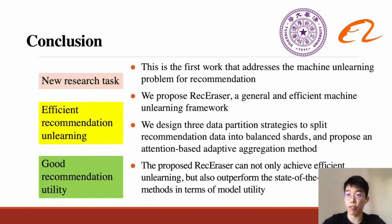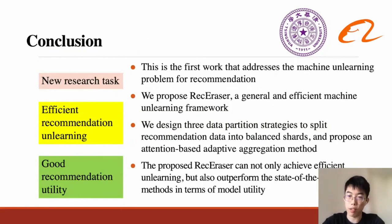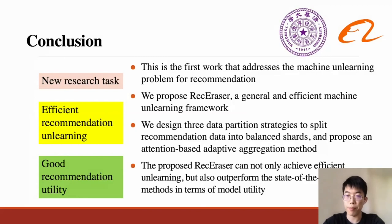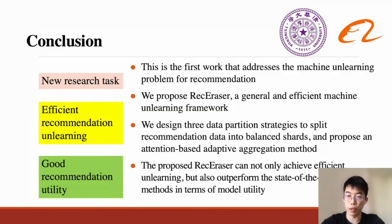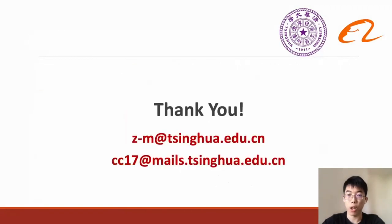In conclusion, we propose the novel RecEraser framework, which is, to the best of our knowledge, the first machine unlearning method tailored to recommendation tasks. To permit efficient unlearning while keeping collaborative information, we design three data partition strategies and propose an adaptive aggregation method to improve global model utility. Extensive experiments on three real-world datasets demonstrate that RecEraser can achieve efficient unlearning and outperform state-of-the-art unlearning methods in terms of model utility. We believe the insights of this work are inspiring for future development of recommendation unlearning methods.